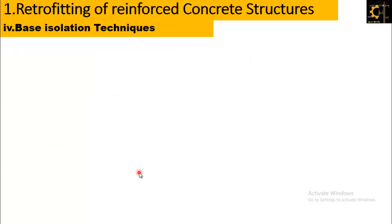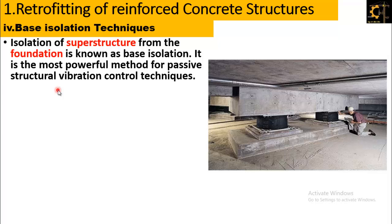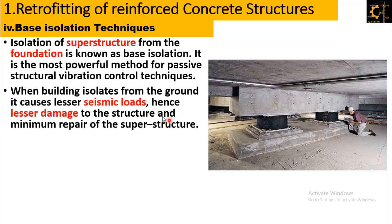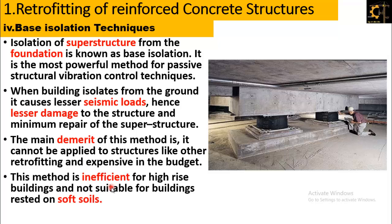The fourth technique of retrofitting is the base isolation technique. Isolation of the superstructure from the foundation is known as base isolation, and it is the most powerful method for passive structural vibration control. When a building is isolated from the ground, it experiences lesser seismic loads, hence lesser damage and minimum repair to the superstructure. The main demerit is that it cannot be applied like other retrofitting methods, it is expensive, it is inefficient for high-rise buildings, and it is not suitable for buildings resting on soft soils.